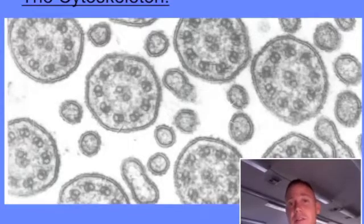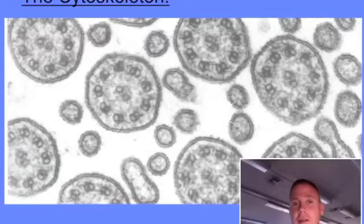This segment is on the cytoskeleton. The cytoskeleton is composed of three types of fiber or protein products. The smallest of these is actin filaments, filaments made from the protein actin.